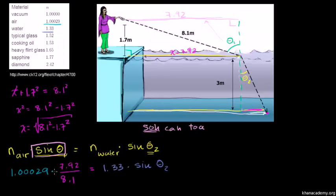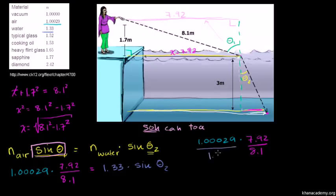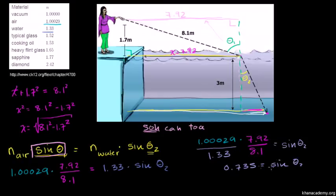To solve for sin(θ₂), divide both sides by 1.33: sin(θ₂) = 1.00029 × 7.92/8.1 / 1.33 = 0.735. Taking the inverse sine of both sides, θ₂ = arcsin(0.735) = 47.34 degrees. So we've found the angle of refraction inside the water.